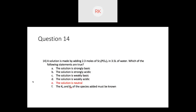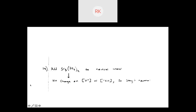Question fourteen: strontium phosphate Sr₃(PO₄)₂ is added to water. The correct answer is that the solution is neutral. When you add strontium (2+ charge) and phosphate (3– charge) to neutral water, you're not really changing the concentration of H⁺ or OH⁻. Adding those ions doesn't affect the amount of H⁺ or hydroxide in the solution, so the pH stays neutral.